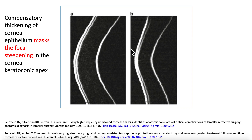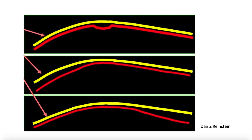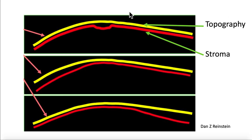The epithelium will try to mask the focal steepening. In a normal cornea, we will have a homogenous epithelium. But in keratoconus or in ectasia, we will have a thinning at the peak and thickening around it, and this epithelium will try to hide the ectasia and improve the optical quality of the eye. You see here three images with the same topography appearance, but the reality of the stroma is different in these three cases. A defect is filled by the epithelium — there is steepening here and flattening there.